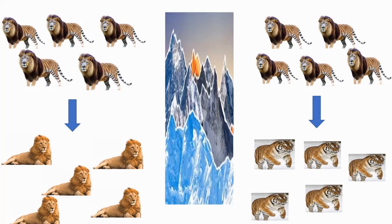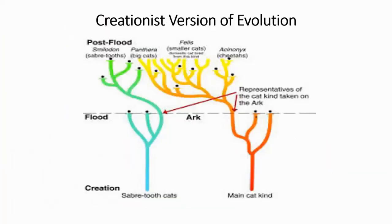Now this version of evolution that I just showed you is not very different from the version of evolution that is promoted by young earth creation organizations. So what you see here if we look at for example that right tree it's the main cat kind what we see is a branching pretty much the same way that I showed you with the ligers